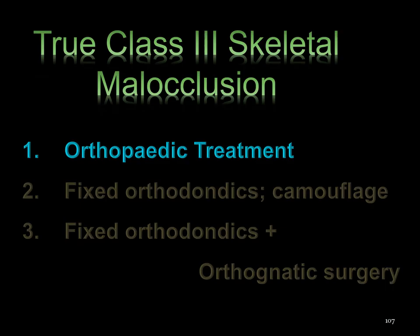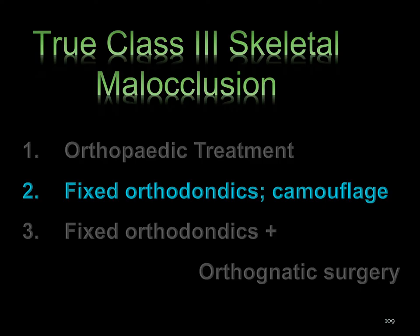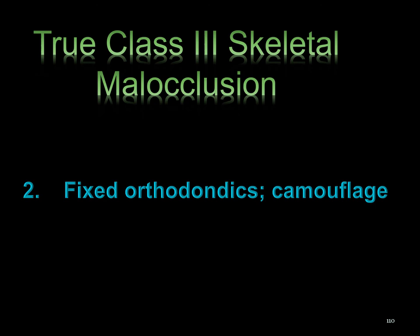In the third part of this webinar, we discussed treatment of Class 3 malocclusion in growing patients. Class 3 Malocclusion, Part 4. In the last part of this webinar, we will discuss camouflage treatment. The presurgical orthodontics and orthognathic surgery component is discussed in another webinar, so we will only overview fixed orthodontic treatment in Class 3 malocclusion cases.